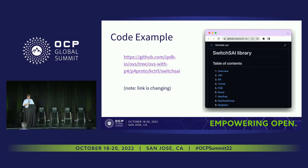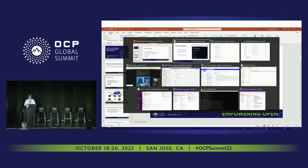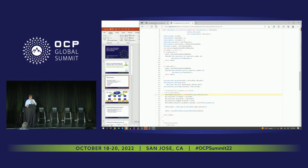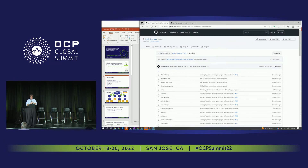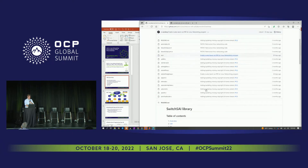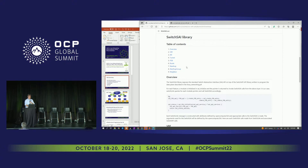Let me jump to the important part, which is the code — this is all open source. There is a website, IPDK.io. The GitHub is IPDK-IO. There's reasonable documentation of the coverage of the SAI library that we support. Fundamental to IPDK, one of the technologies we use is called P4. A quick show of hands — how many people have heard of P4 and are reasonably comfortable with it? That makes this talk easier. One of the core technologies of IPDK is P4.